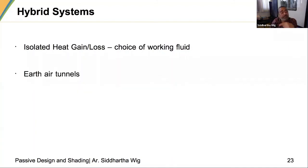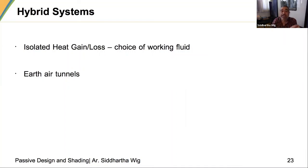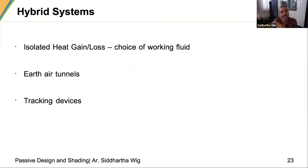Earth air tunnels: the principle is that four to five meters below the earth, the temperature is at the annual mean — in summer it is much colder, in winter it is much warmer. There are some inherent problems like rodents, vermin, friction and the energy needed to blow air through. Tracking devices could be used for things like optical daylighting, channeling concentrated light or concentrated heat to a part of the building.